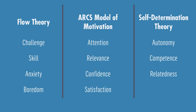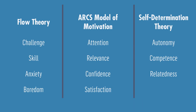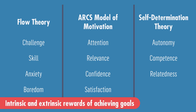We also have anxiety in flow state, relevance in the ARCS model, and relatedness in self-determination theory — and anxiety, relevance, and relatedness all deal with self-esteem, and especially how one might appear to others. There are also a couple that deal with personal choice: relevance in the ARCS model and autonomy in self-determination theory. And a few that deal specifically with intrinsic and extrinsic rewards of achieving goals — satisfaction in the ARCS model and autonomy in the self-determination model.